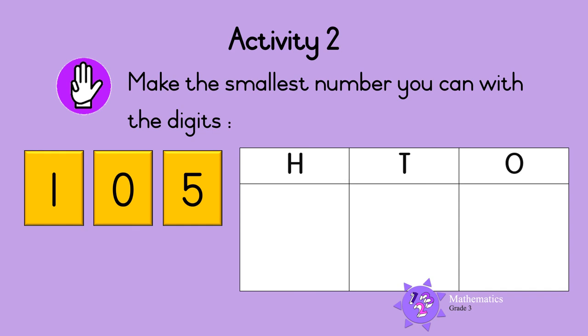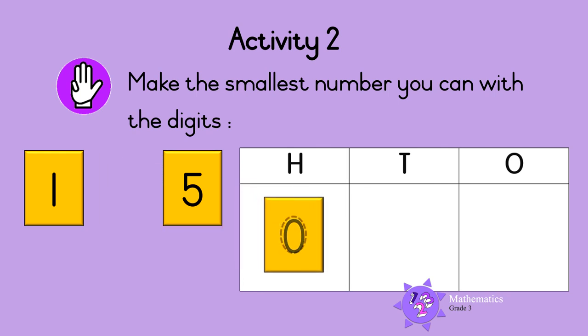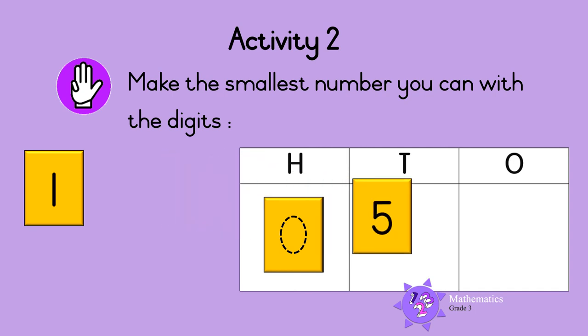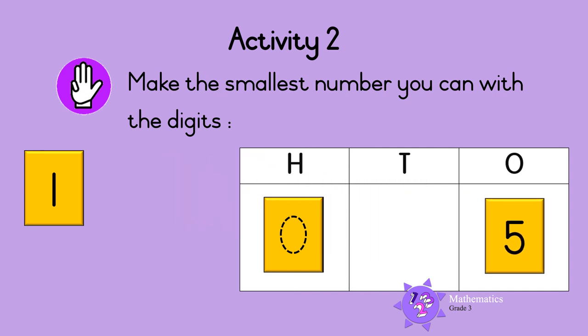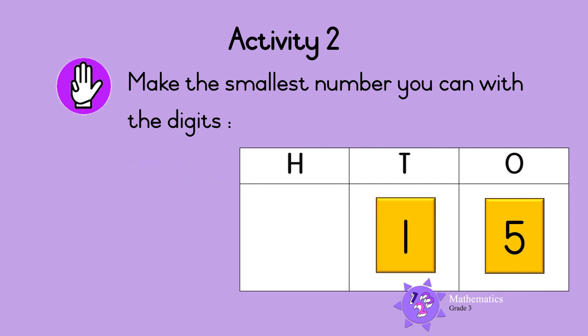Last one. Zero is the lowest value, so zero goes in the hundreds column — but we don't write a zero at the beginning of a number. Then five is the highest number, so five goes in the ones column. One goes in the tens column. So the smallest number we can make is fifteen. Well done, see you next time!